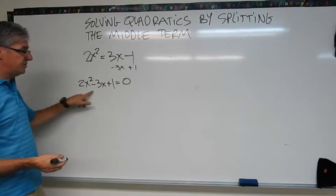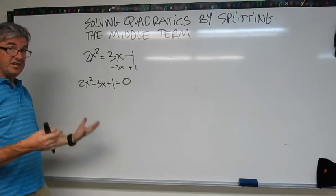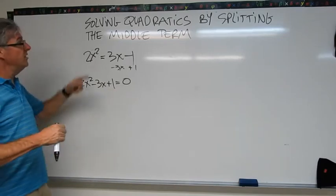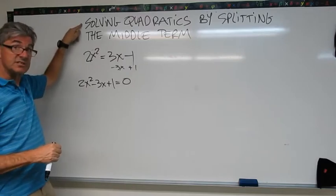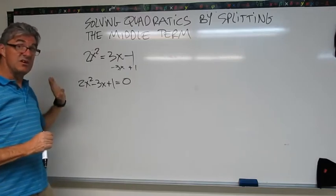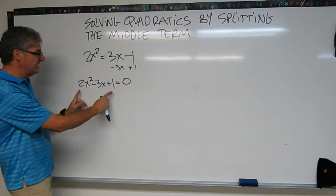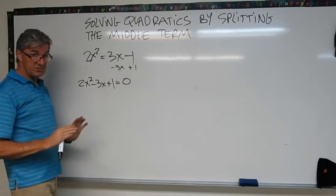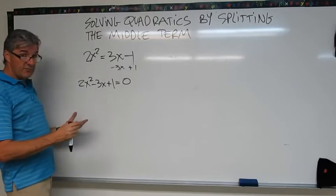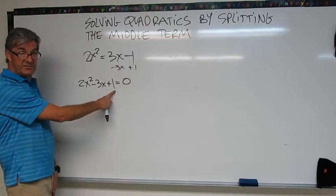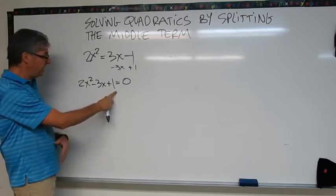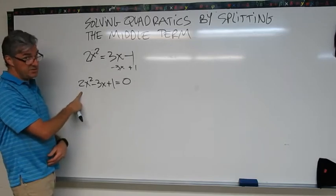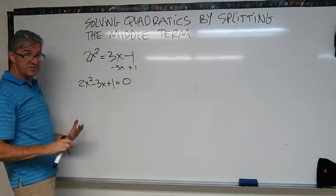Now I want to look at this three-term expression and figure out how to factor it. You know we're going to split the middle term because that's what this lesson's about. But let's just pretend we don't know that. How would I be able to tell? I have three terms, so it's not a difference of squares. Now I look for perfect squares. One is a perfect square, so again, that might be working. However, 2x² is not a perfect square, so I can't use that pattern.